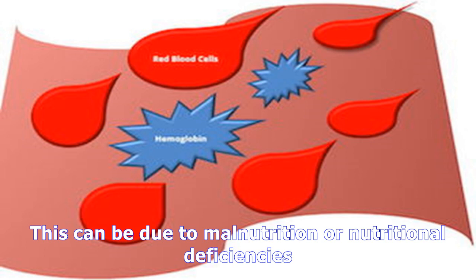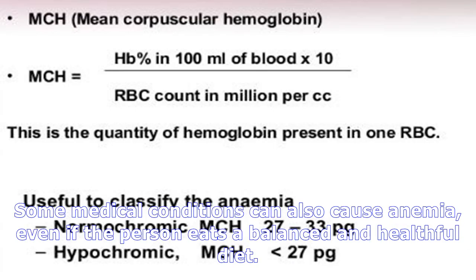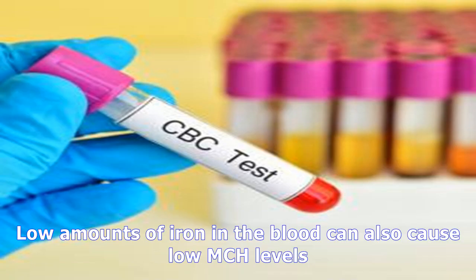Low amounts of iron in the blood can also cause low MCH levels. The body uses iron to make hemoglobin, and if the body runs out of iron, iron deficiency anemia can result. This type of anemia may be more common in vegetarians or people with poor nutritional intake.